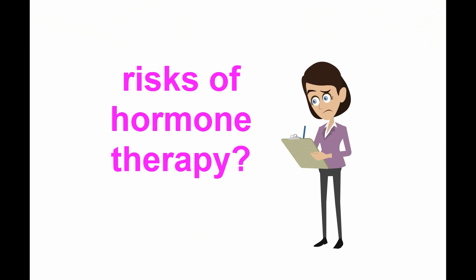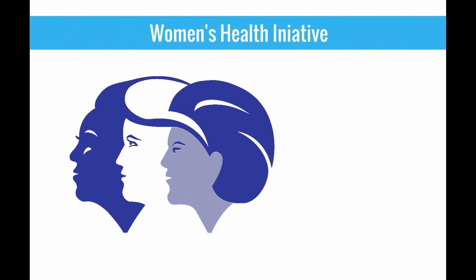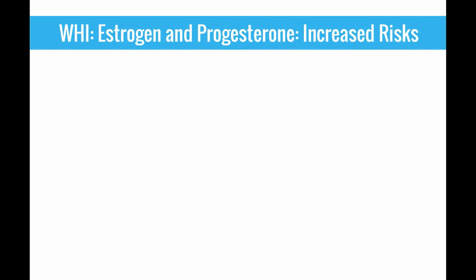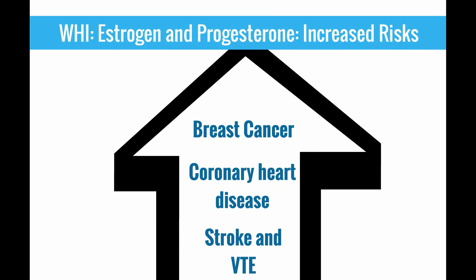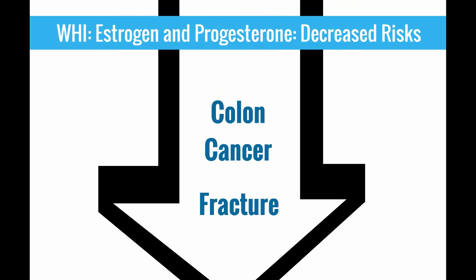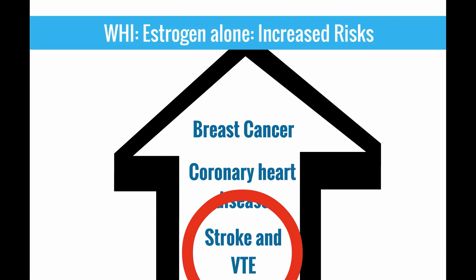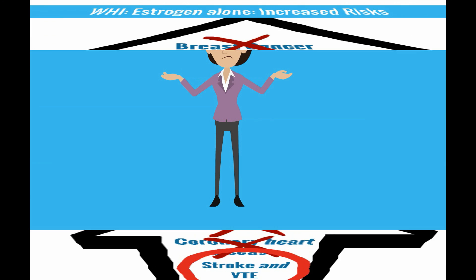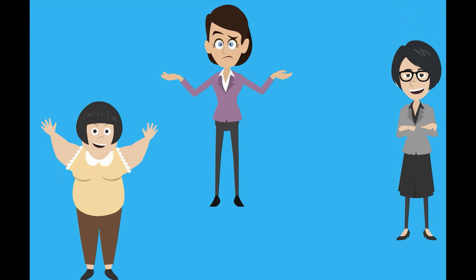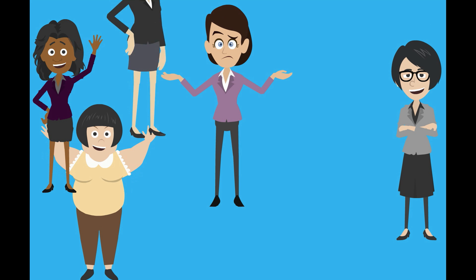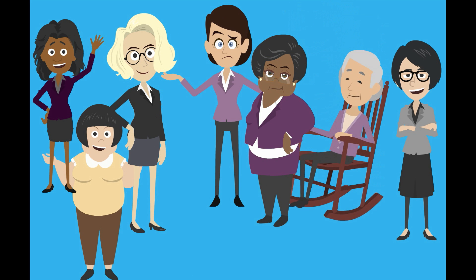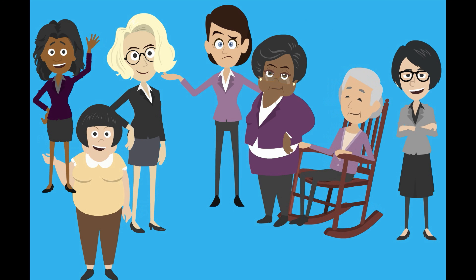Are there risks of hormone therapy? Yes. The Women's Health Initiative was a large, randomized, placebo-controlled trial. This trial demonstrated an increased risk of breast cancer, coronary heart disease, stroke, and venous thromboembolic event in women taking estrogen and progesterone versus placebo. However, there were decreased risks of colon cancer and fracture in women taking estrogen and progesterone. For women only receiving estrogen, there was an increased risk of thromboembolic event, but not an increased risk of cardiovascular event or breast cancer. It is important to note that it is difficult to generalize the findings from the WHI to younger, more recently menopausal women, since the WHI examined women aged 50 to 77 years old and many were past the menopausal transition at the time of the study.